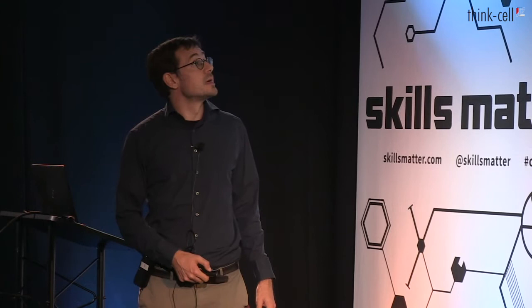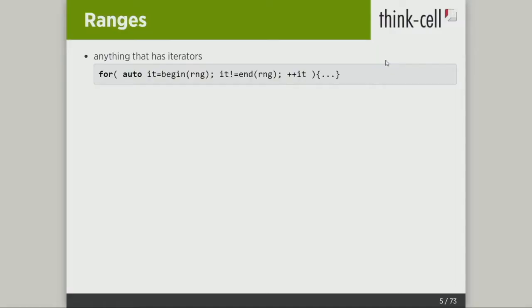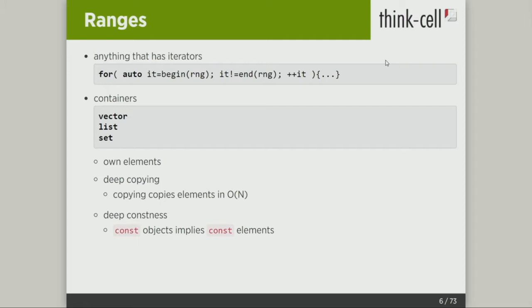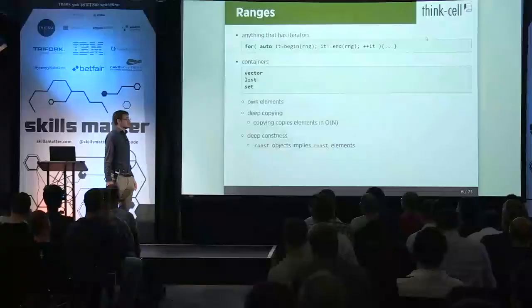So iterators can be elements and borders. Now we have ranges. What's a range? Well, a range colloquially is anything that has iterators that can be iterated over. One part of these things are containers. Containers are your familiar vectors, lists, and sets. They own their elements. They have deep copying, so when you copy the container you will copy all the elements. And they have deep constants, so with a constant container you can't mutate the elements.